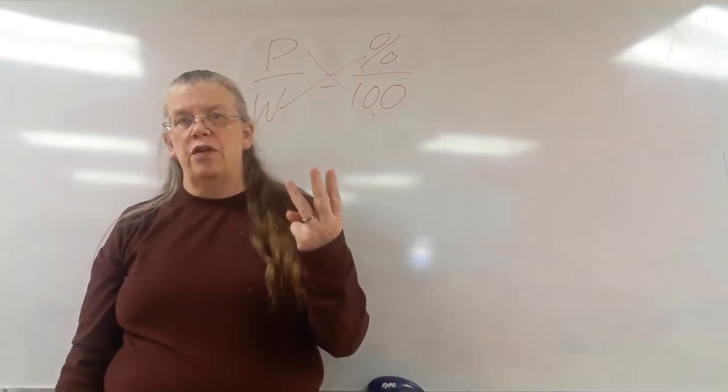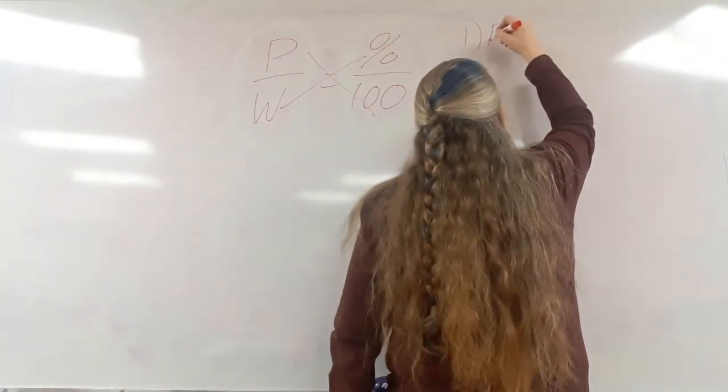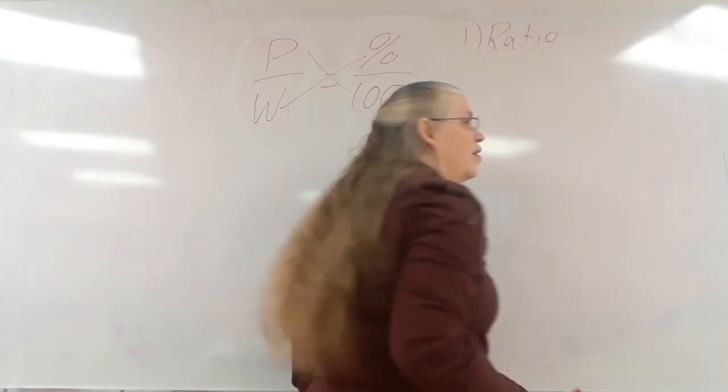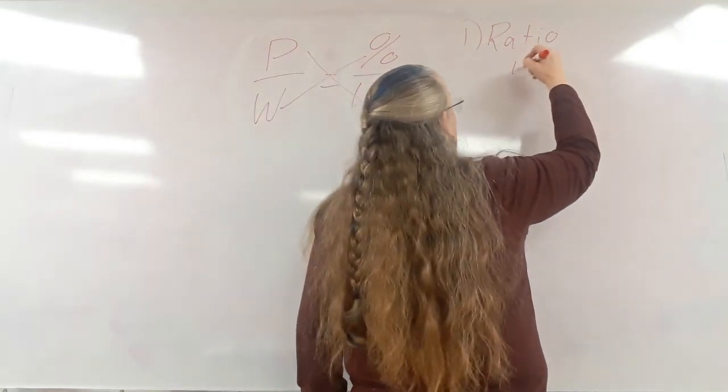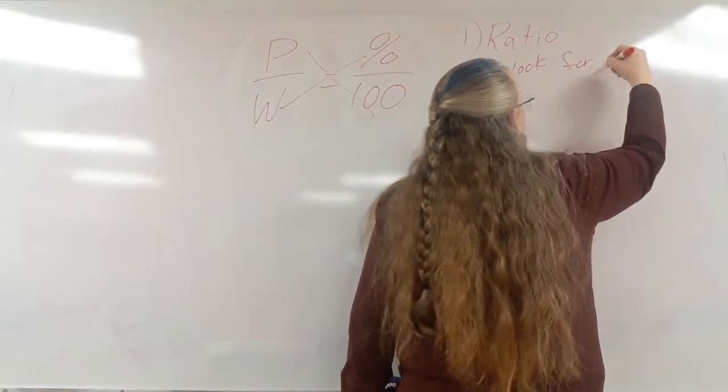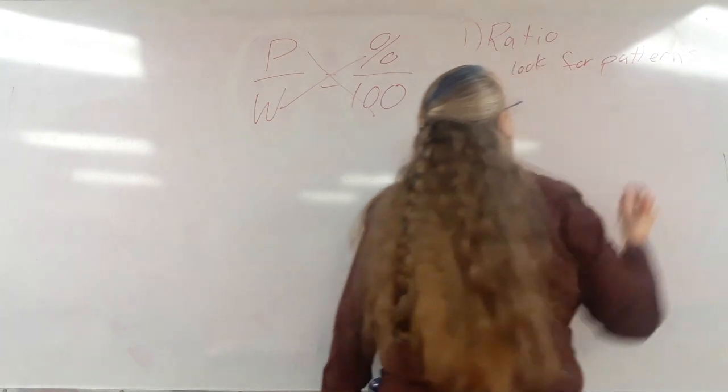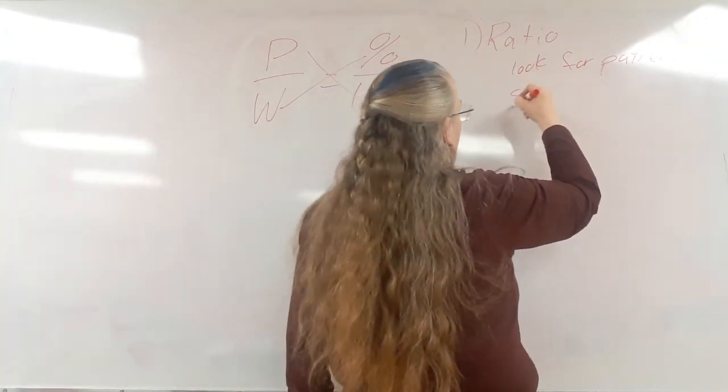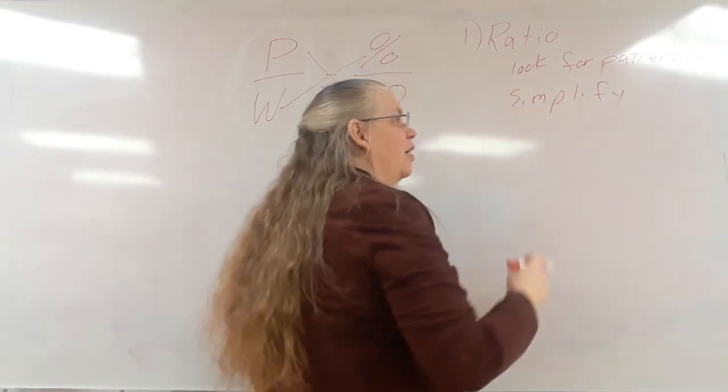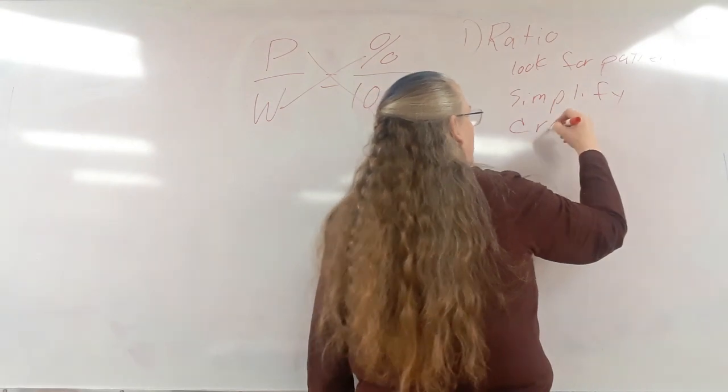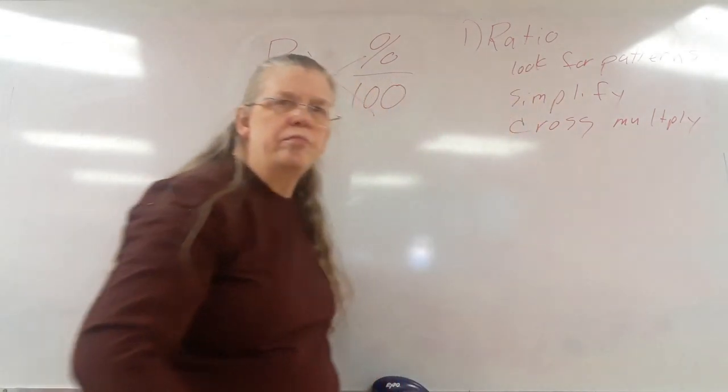There's three different ways we can solve these. One is to treat it like a ratio. So that means you look for patterns. If you can't find a pattern, you simplify. And if you still don't see a pattern, then you cross multiply.